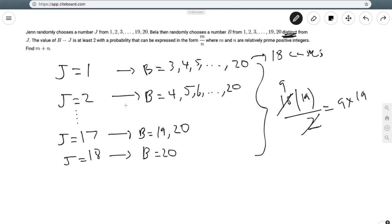The probability on top is 9 times 19 total desired cases, but the total is 20 times 19, because Jen has 20 ways to pick a number, but Bella has only 19 ways since Bella's number must be different from Jen's number. It's not 20 times 20, it's 20 times 19. The 19s cancel, which is very nice.